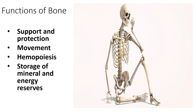The next function is hematopoiesis — the production of red blood cells — and this is happening within our bone marrow cavities. Lastly, bones provide storage of minerals and energy reserves in the form of fat. Red bone marrow is for blood production, yellow bone marrow is for minerals and energy storage. Other minerals stored include calcium, phosphorus, and zinc.